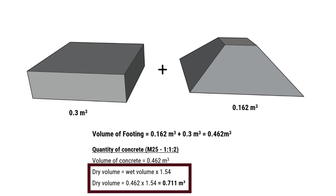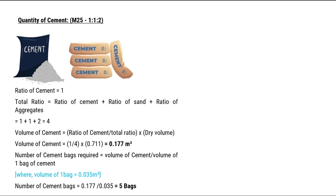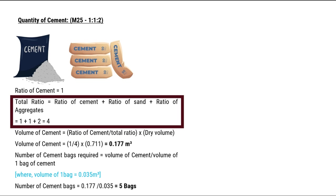To get the dry volume, we multiply the wet volume by 1.54. So 0.462 multiplied by 1.54 equals 0.711 cubic meters. Now for M25 concrete mix with a ratio of 1:1:2, the total ratio will be equal to 4.